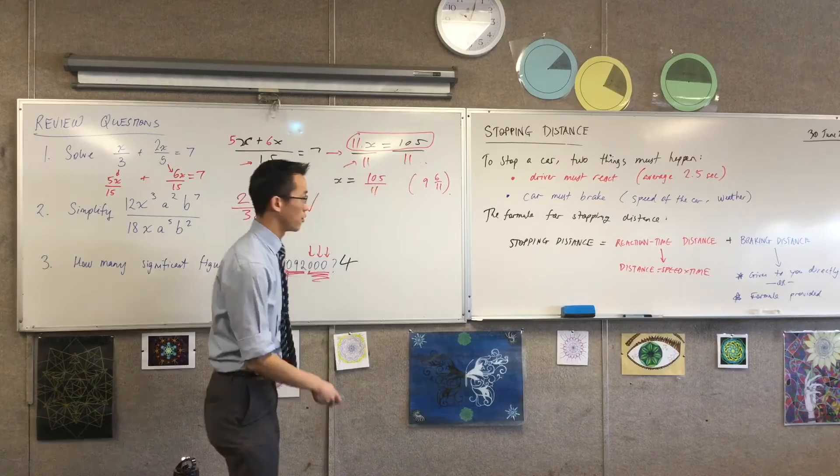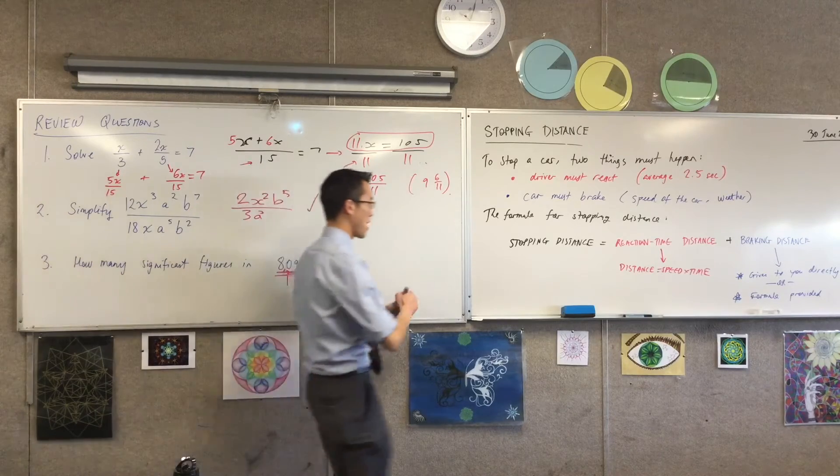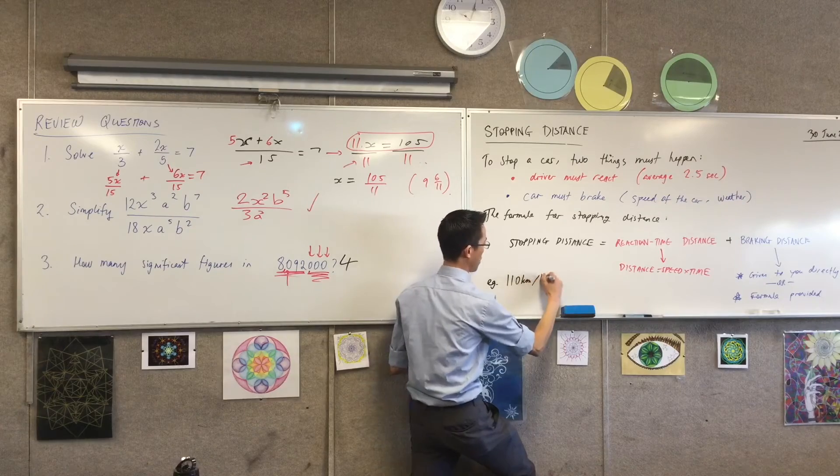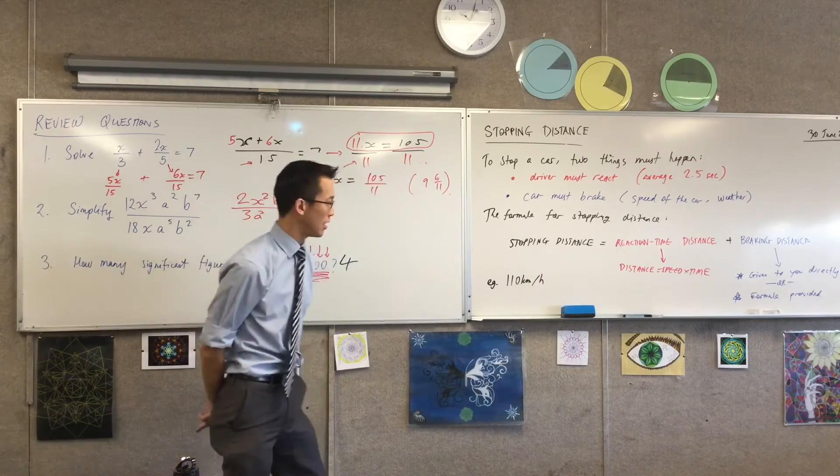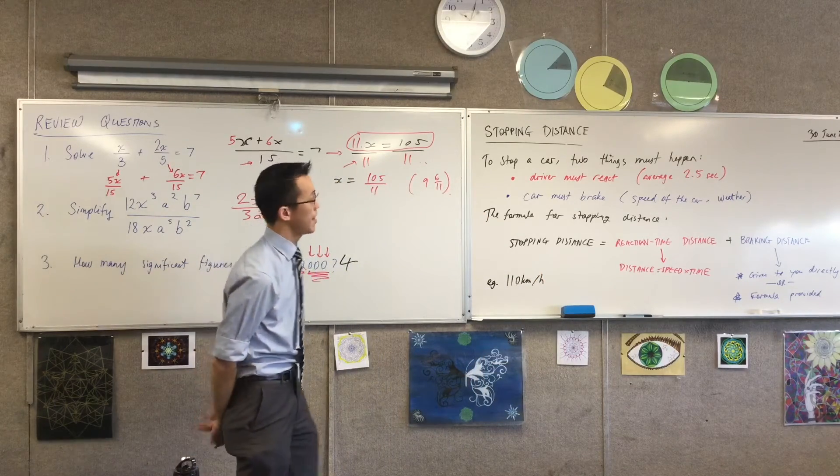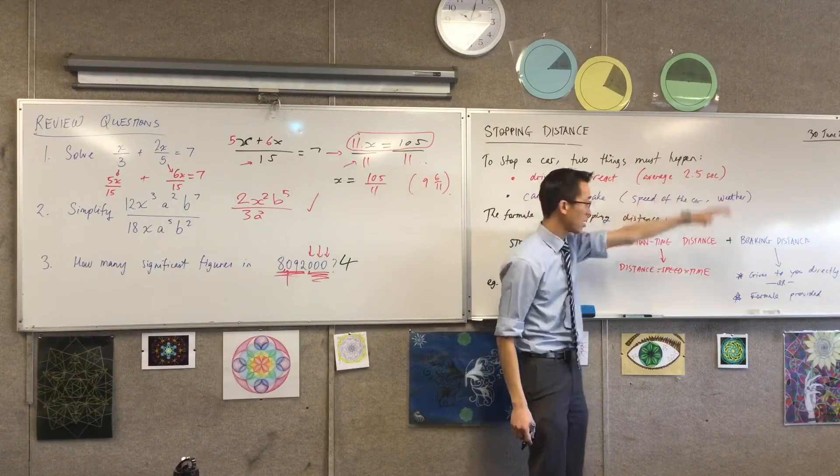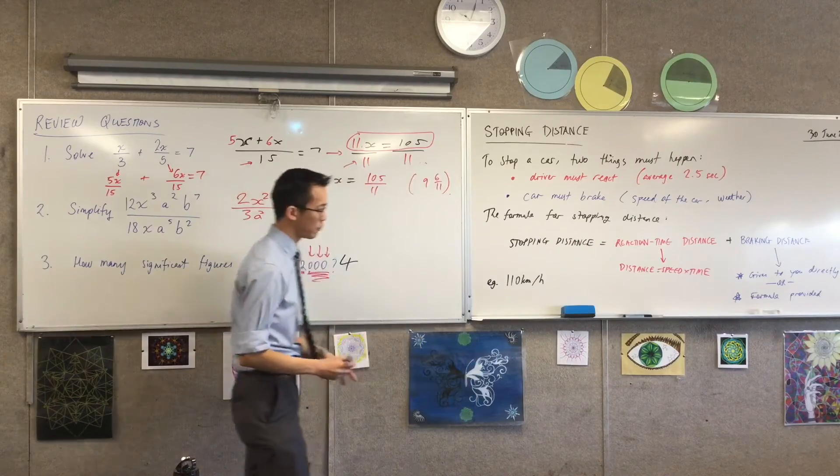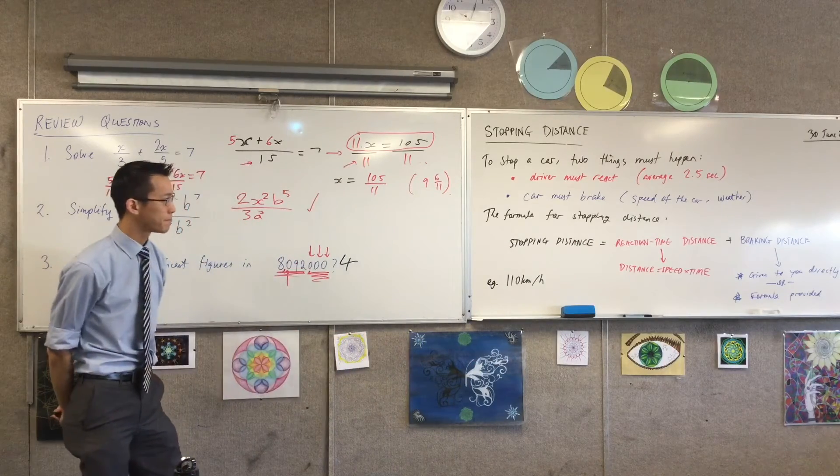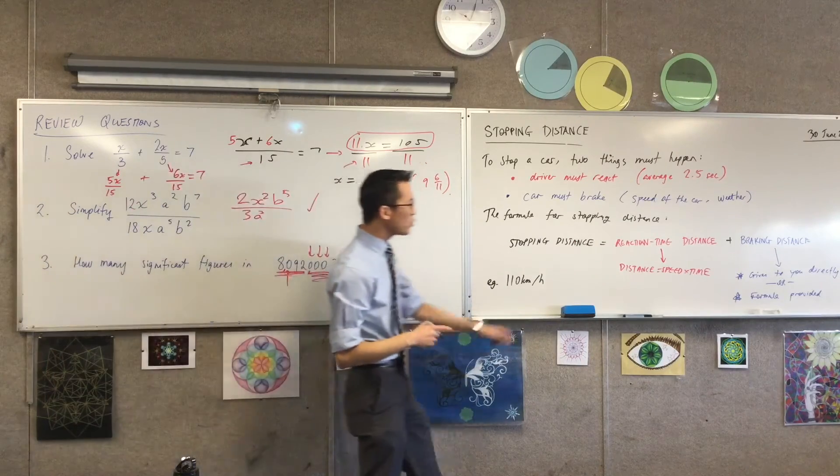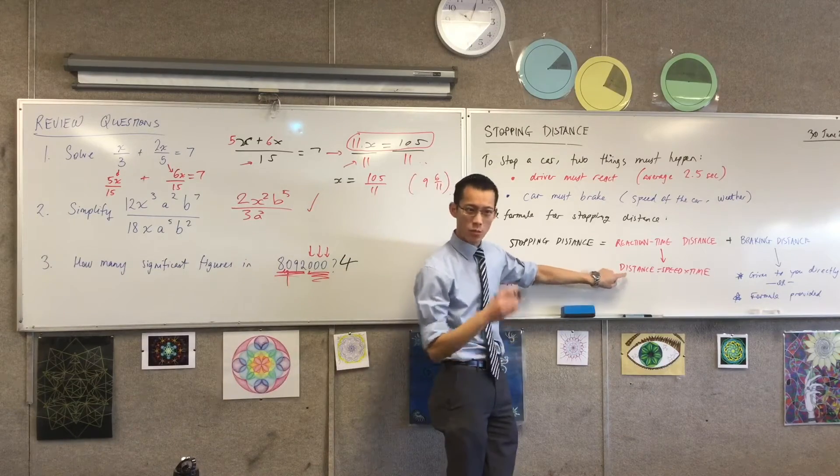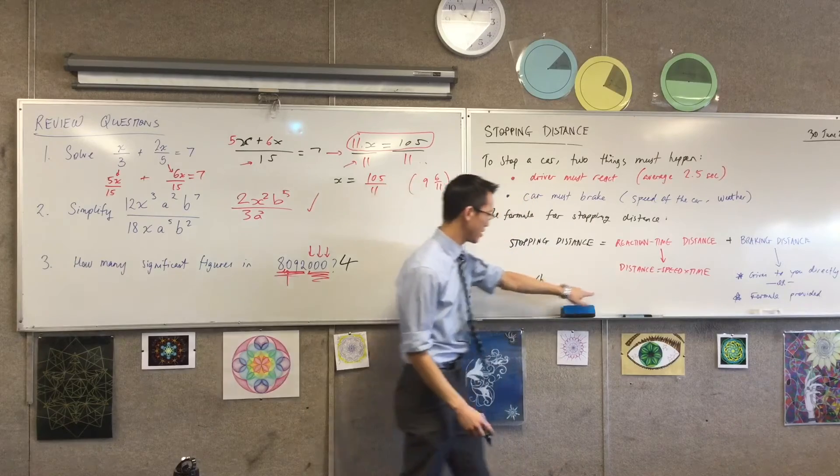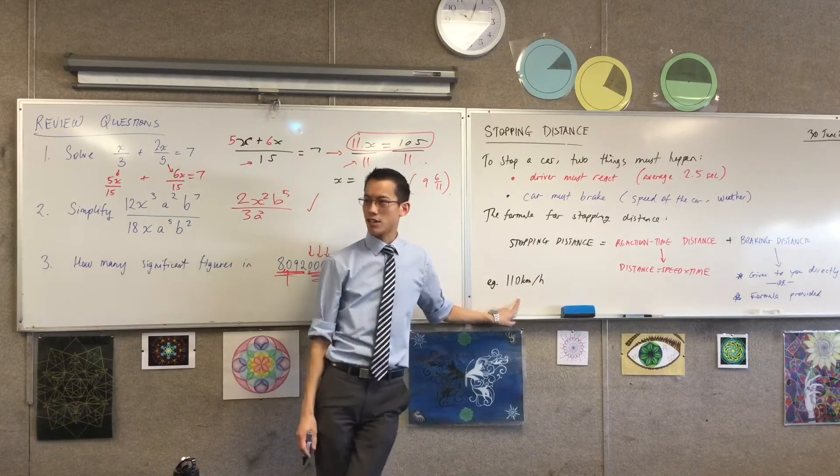Now let's use that example. Let's say you are 110 kilometers per hour, and I'm interested in the stopping distance if I just have a normal 2.5 second reaction time, and the braking distance is that 67 meters that I mentioned to you before, because that's what I looked up this morning. So how do I work out, this is where most of the calculation is, how do I work out the reaction time distance if that's the speed my car is traveling? What do I do?